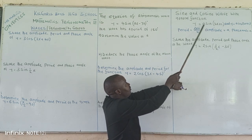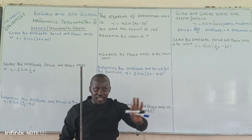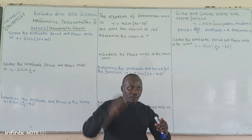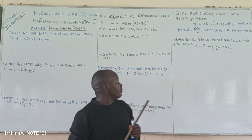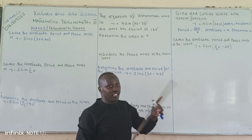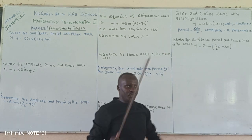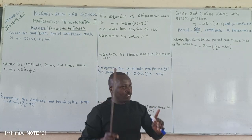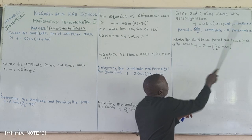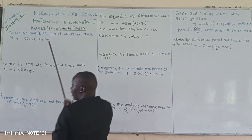For example, if p is equivalent to 4, then the period will be 360 divided by 4. So the period is 360 — that is a complete circle — divided by the coefficient of p. The amplitude, which is the highest point of the wave, is given by the value of a. The first angle or the shift angle is equivalent to c, so the first angle is the same as the value of c.